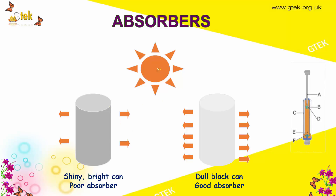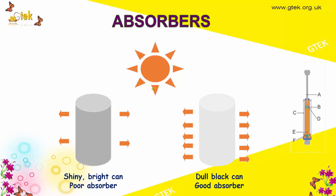We have a comparison here: rays coming from the sun hit the shiny bright surface, which is obviously the poor absorber, versus the dull black one, which is the good absorber. You can find the difference of which surface is absorbing more and which is absorbing less.